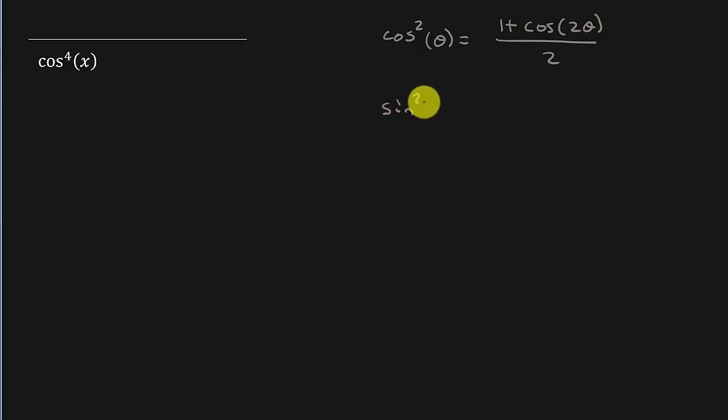And the formula for sine is sine squared theta is equal to 1 minus cosine 2 theta over 2. So these are the formulas we'll use.